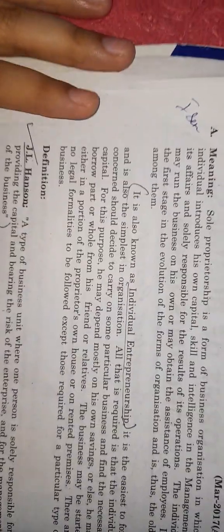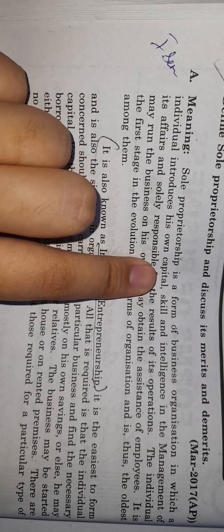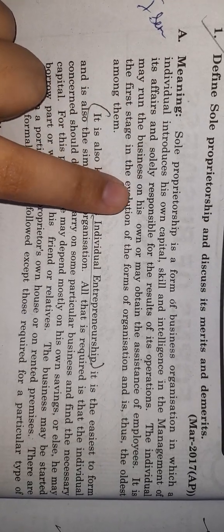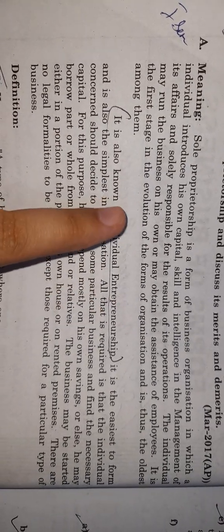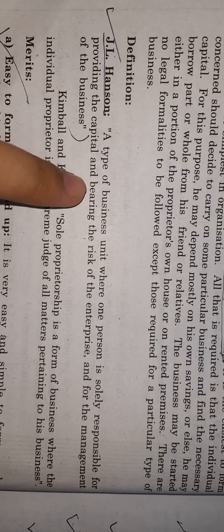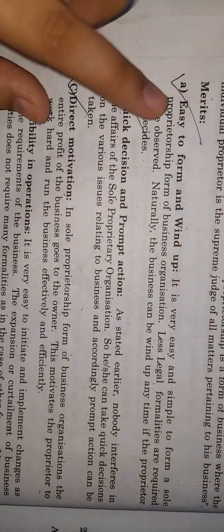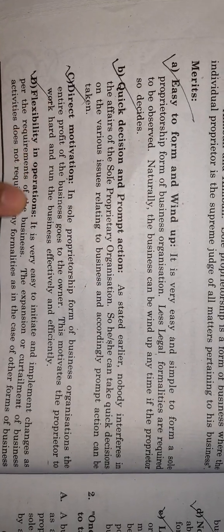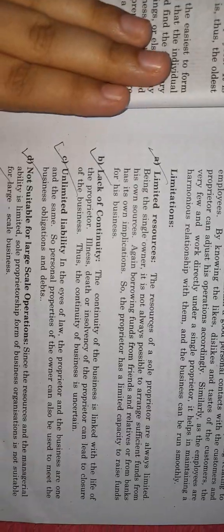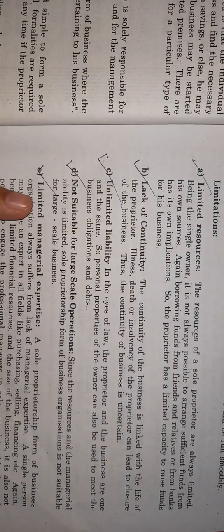Let's recap. Sole proprietorship is a form of business in which an individual introduces his own capital, skills, intelligence, and management, and is responsible for the results. The merits are: easy to form and wind up, quick decision-making, direct motivation, flexibility in operations, maintenance of business secrets, and personal touch. The limitations are: limited resources, lack of continuity, unlimited liability, not suitable for large-scale operations, and limited managerial expertise.